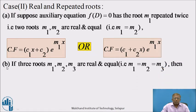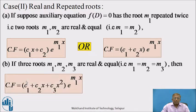Point B: if three roots m₁, m₂, m₃ are real and equal, that is m₁ = m₂ = m₃, then three constants c1, c2, c3 are arranged in the bracket as CF = (c₁ + c₂x + c₃x²)e^(m₁x), and so on.